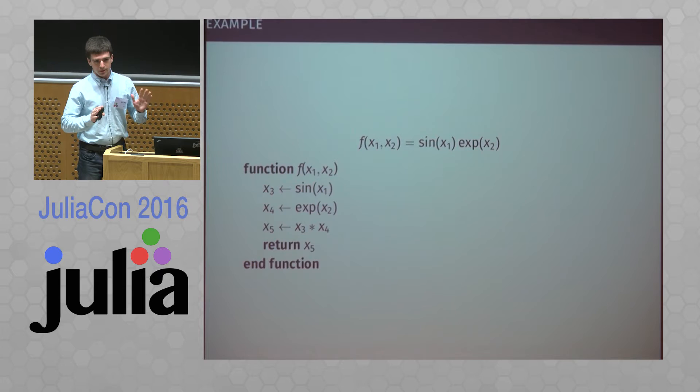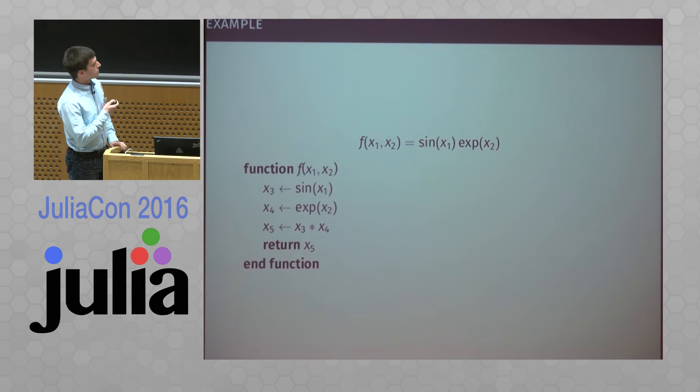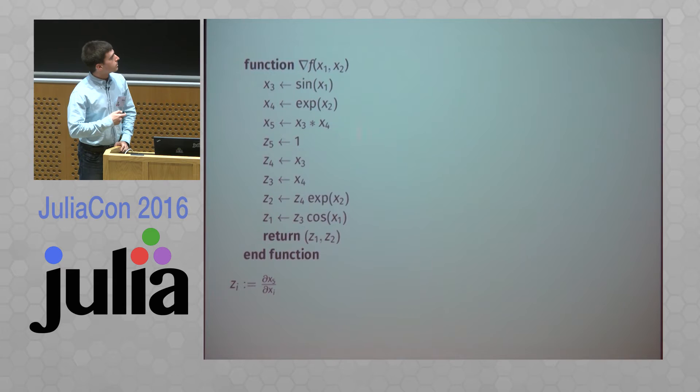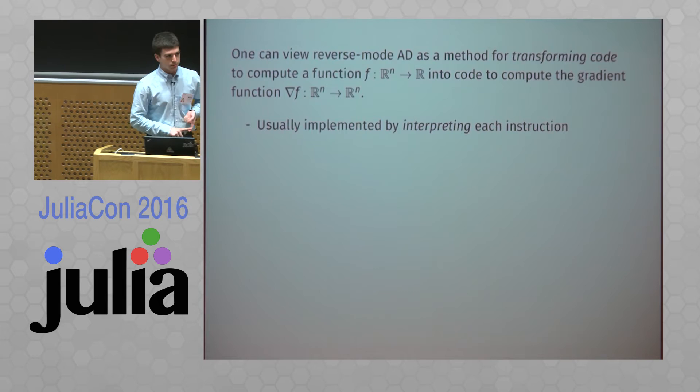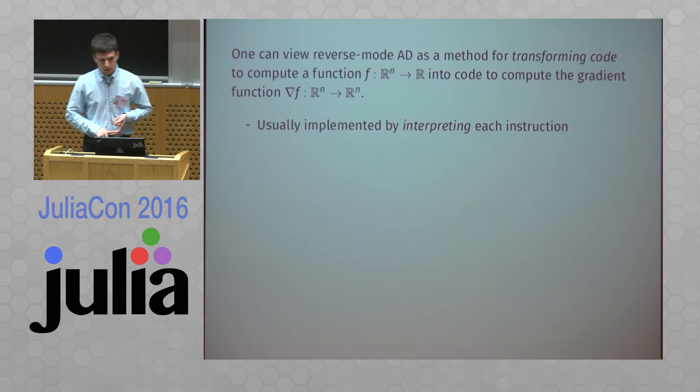For example, if we have a closed-form expression multiplying sine times exponent, this is how we'd write it down in sequential form. We can then transform that into a function that gives us the gradient. One way to view reverse mode is as a method for transforming code: we have that sequence of operations and some way to transform it into a way to compute the gradient.